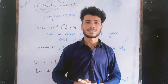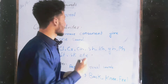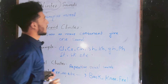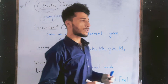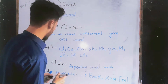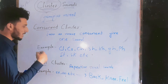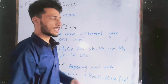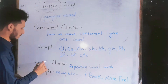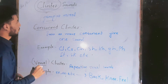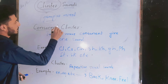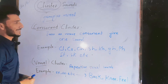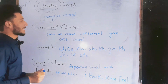In cluster sounds there are two types of clusters. There are five or six types but the main two are: the first one is consonant cluster, and the second one is vowel cluster.